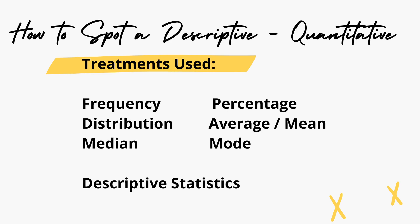Another tip to spot descriptive quantitative research is that the treatments used are basically descriptive statistics such as frequency, distribution, mean, median, mode, average, and percentage.